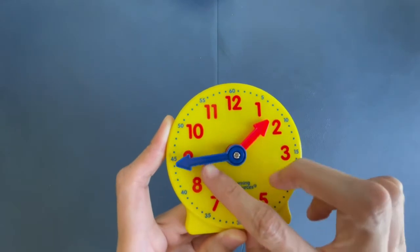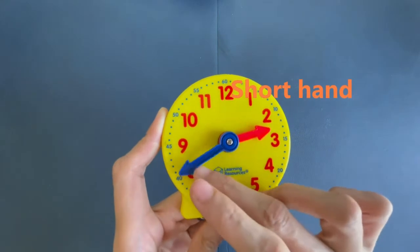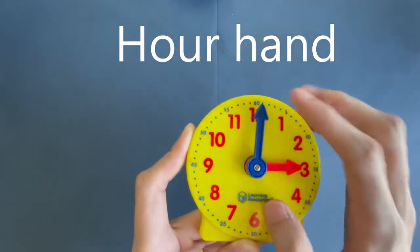And as you can see, the shorter hand, the one over here in red, the one moving around the clock much slower, is called the hour hand.